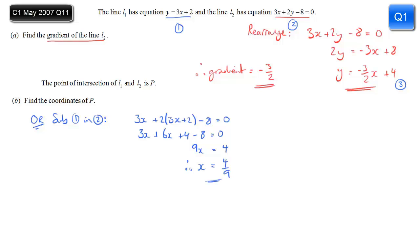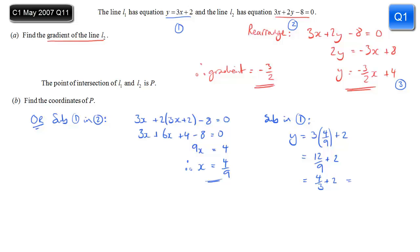That's the x-coordinate of point P, but we need the y-coordinate as well. Substituting back into equation 1, the simplest equation, we get y equals 3 lots of 4 ninths plus 2. Three lots of 4 ninths is 12 ninths. Simplifying, 12 ninths is 4 thirds, and 4 thirds plus 2 is 4 thirds plus 6 thirds, which is 10 thirds. So y equals 10 thirds.